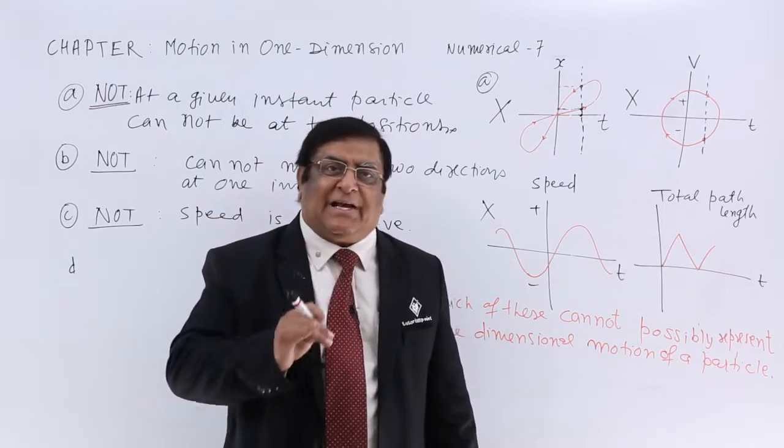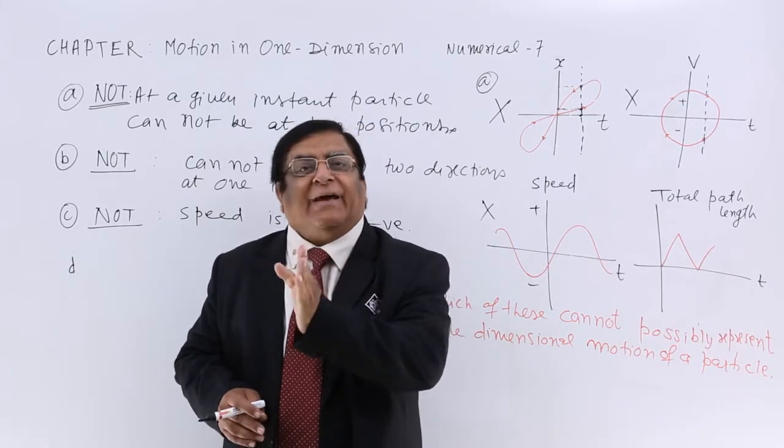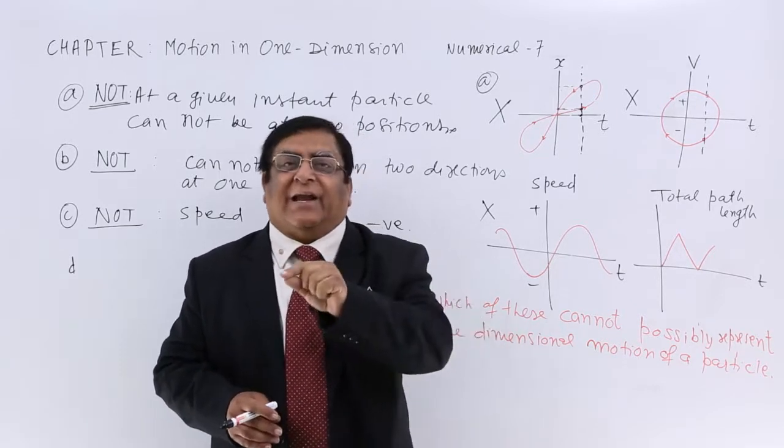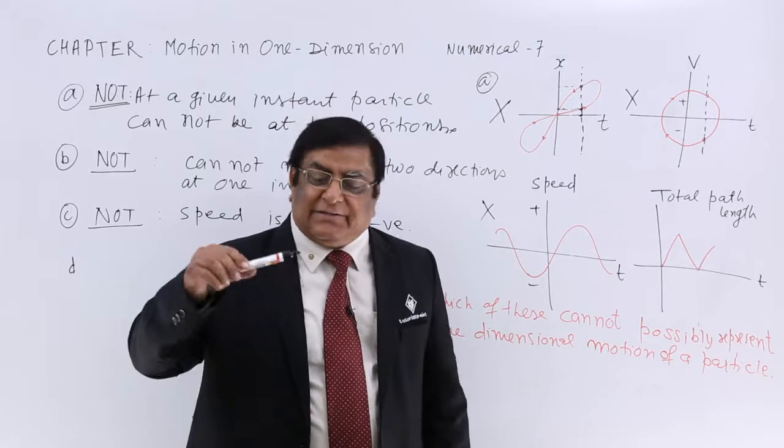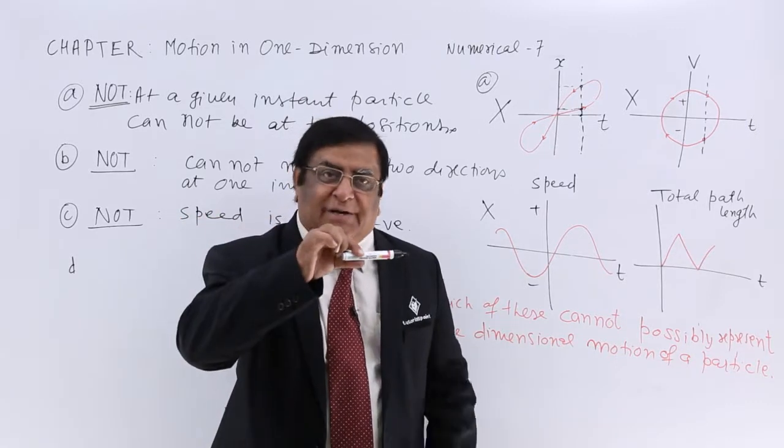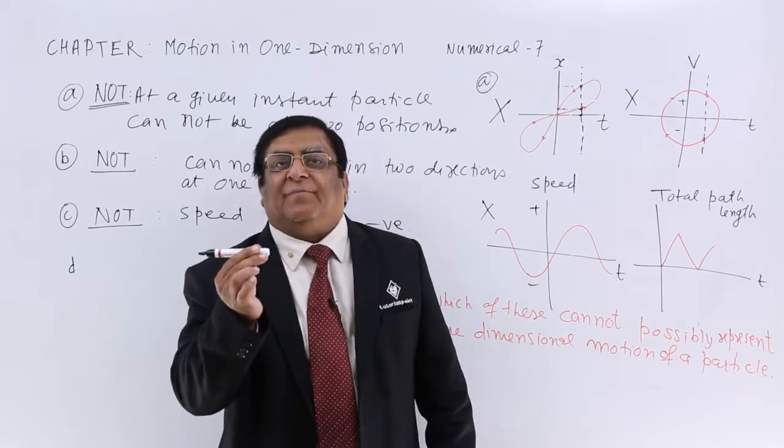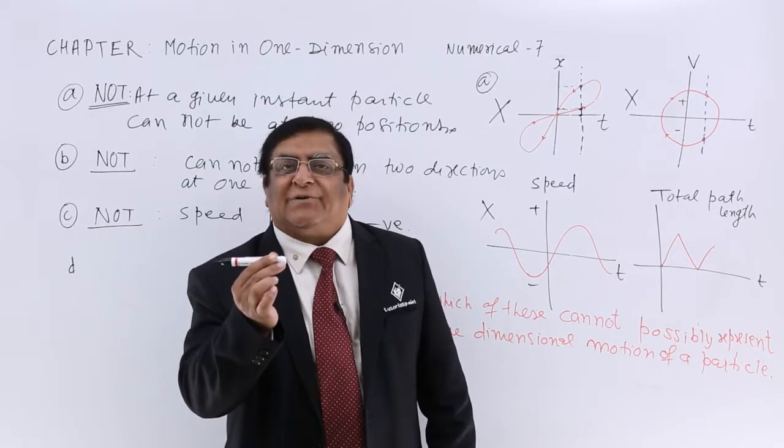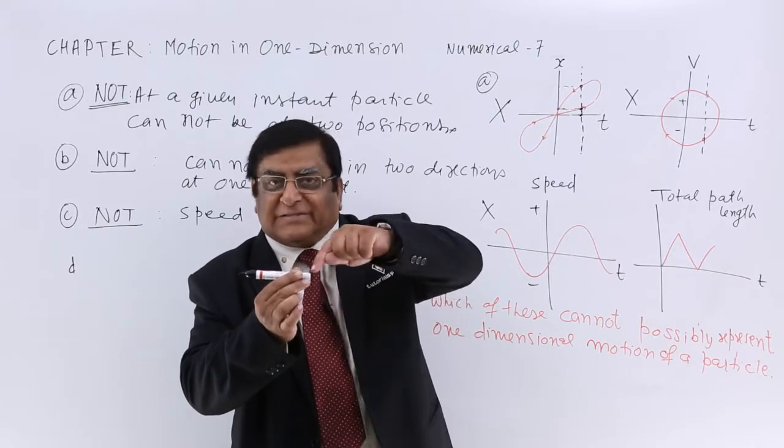Will it decrease any time? How can it decrease? Whatever I have traveled, that can never be minus. That can never be deducted back. So even if I turn, I go there 200 meters, turn back, and I come here 50 meters. How much have I traveled?